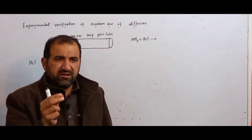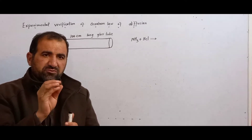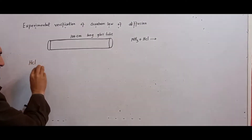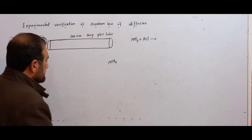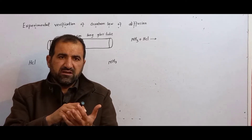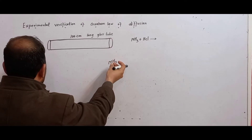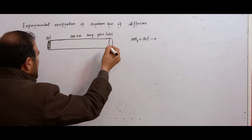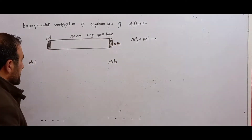Cotton swabs are used. One cotton swab is soaked in the HCl solution and placed at one end of the tube, and another cotton swab is soaked in the NH3 solution and placed at the other end of the tube.